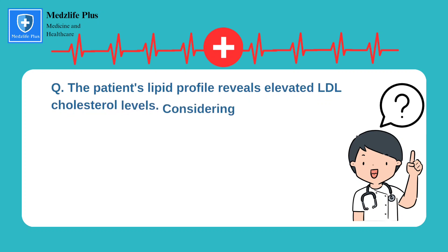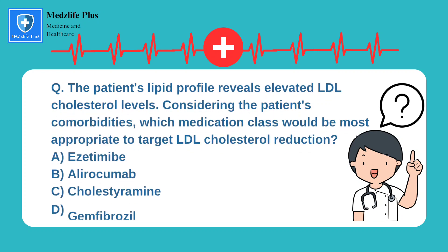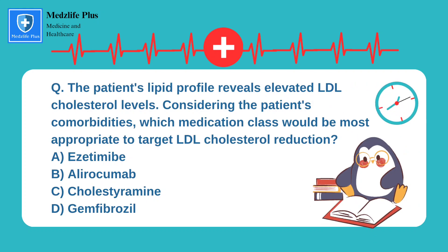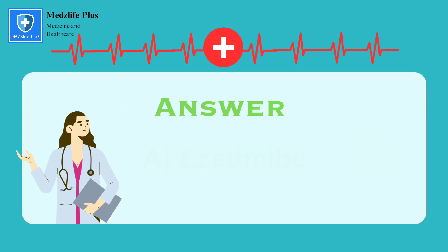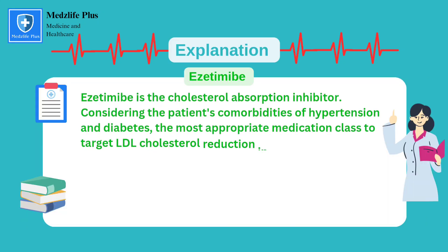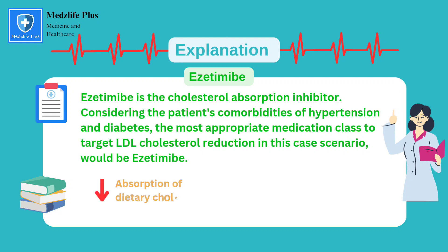Question number 6: the patient's lipid profile reveals elevated LDL cholesterol levels. Considering the patient's comorbidities, which medication class would be most appropriate to target LDL cholesterol reduction? The right option is A, that is ezetimibe. Ezetimibe is a cholesterol absorption inhibitor that reduces the absorption of dietary cholesterol in the small intestine, leading to lower LDL cholesterol levels. It can be used as an adjunct to statins or as an alternative therapy in patients who are intolerant to statins or have contraindications.